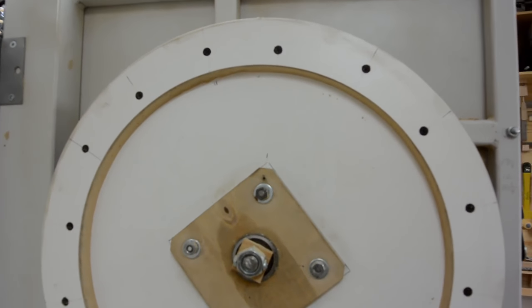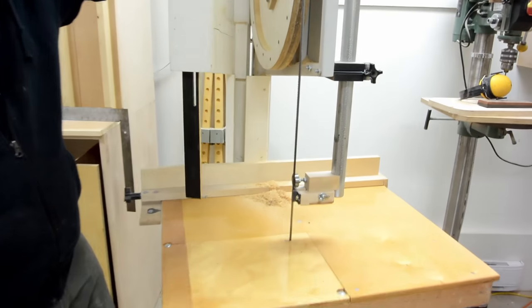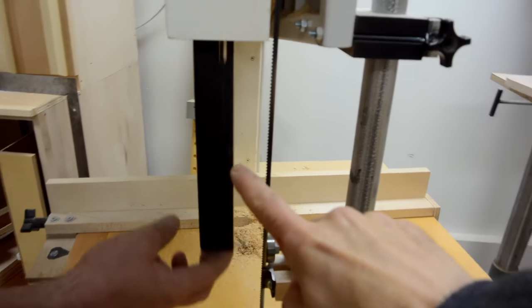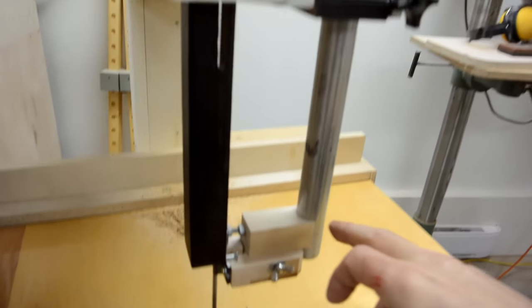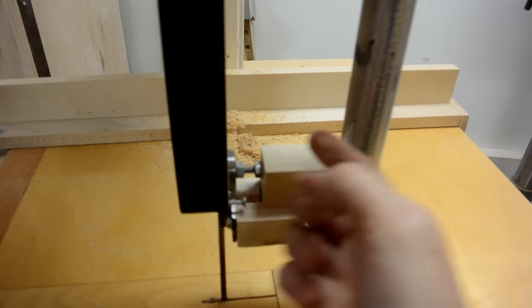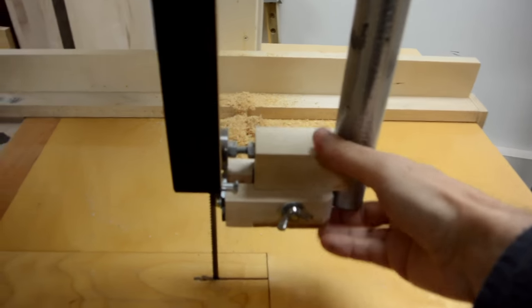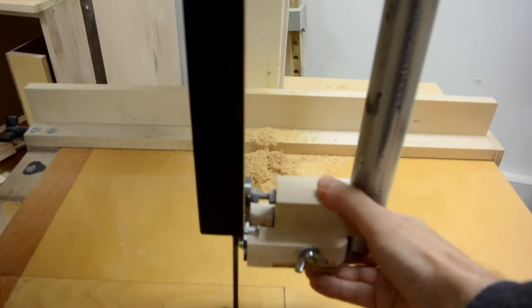An interesting detail about John's bandsaw is how the blade guard works. It slides independently on the case, but then it's got a screw on here, and that way when the blade guides have moved up and down, the guard moves with it.